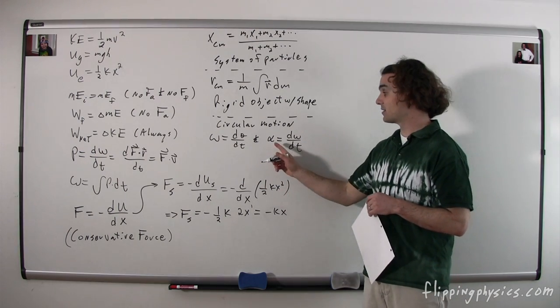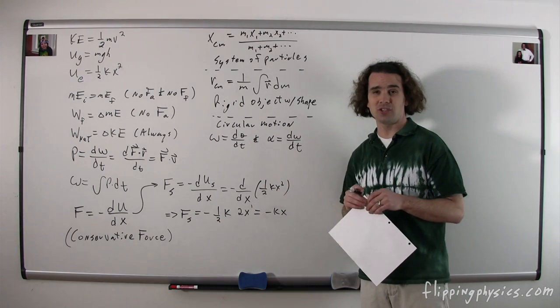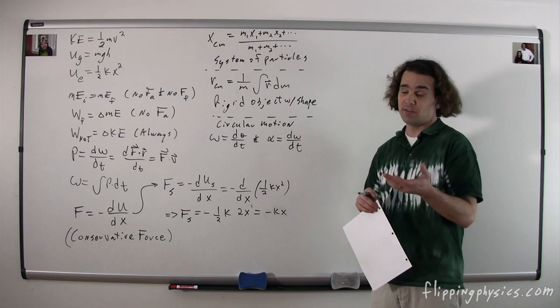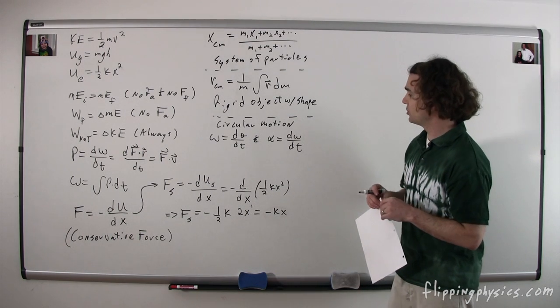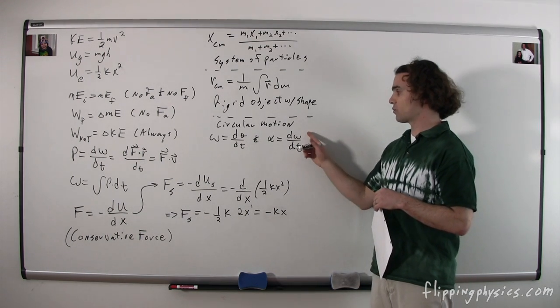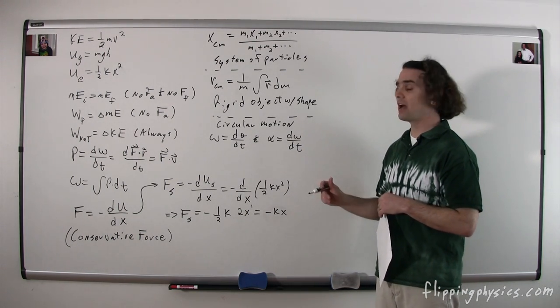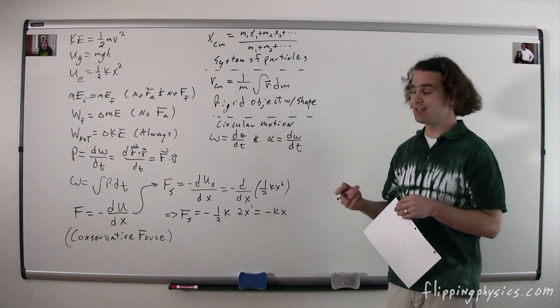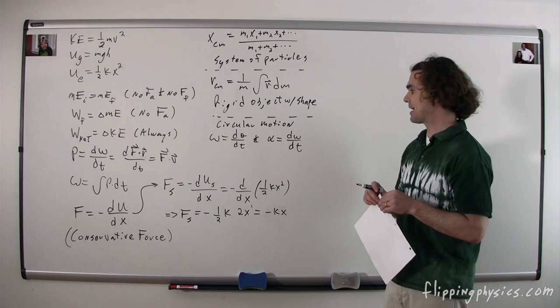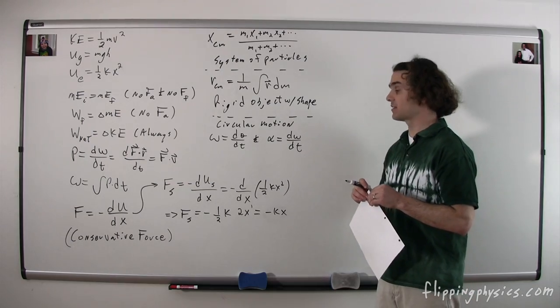And we have the angular acceleration, which is alpha — or the 'fishy thing' — which is equal to the derivative of the angular velocity as a function of time, giving us the instantaneous angular acceleration.